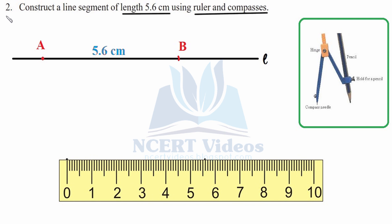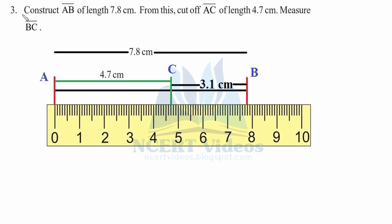Question three: construct line segment AB of length 7.8 cm, then cut off line segment AC of length 4.7 cm, and measure line segment BC. First, construct line segment AB measuring 7.8 cm directly with the ruler. Once we have constructed it, we will cut off AC from it.